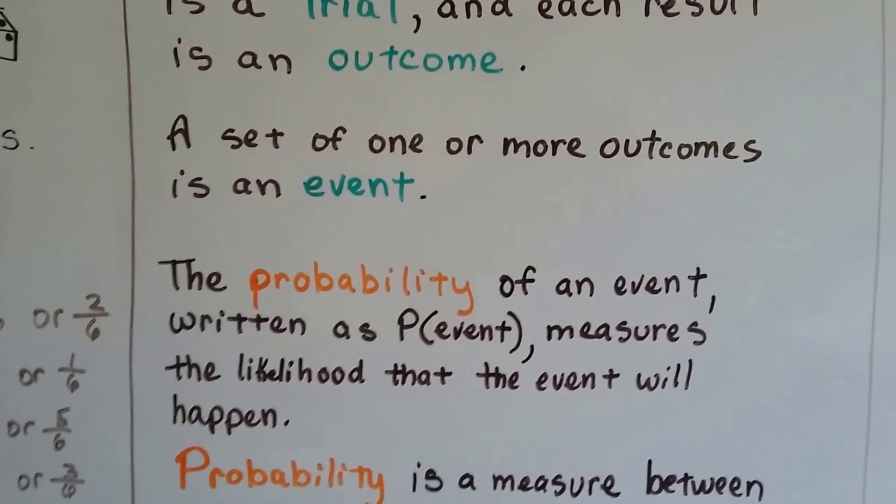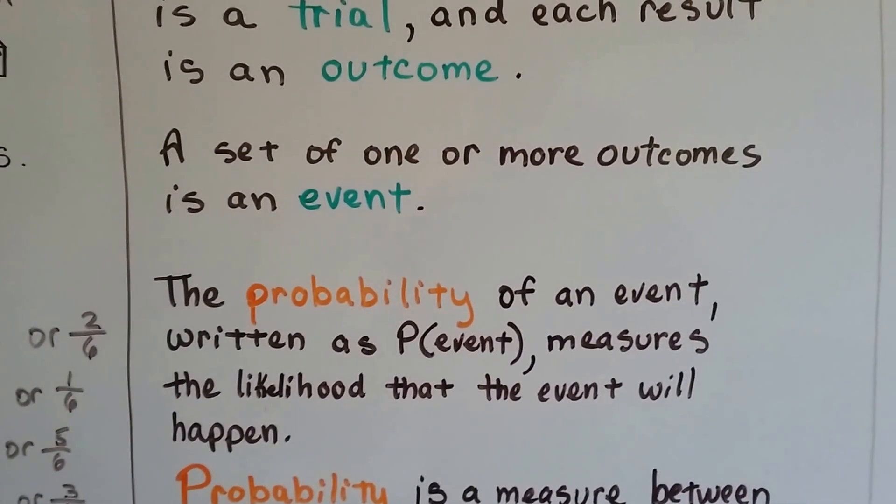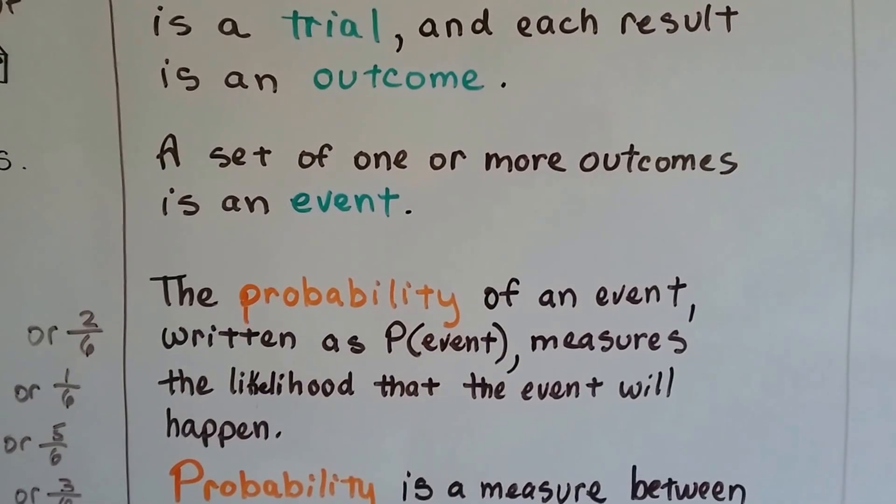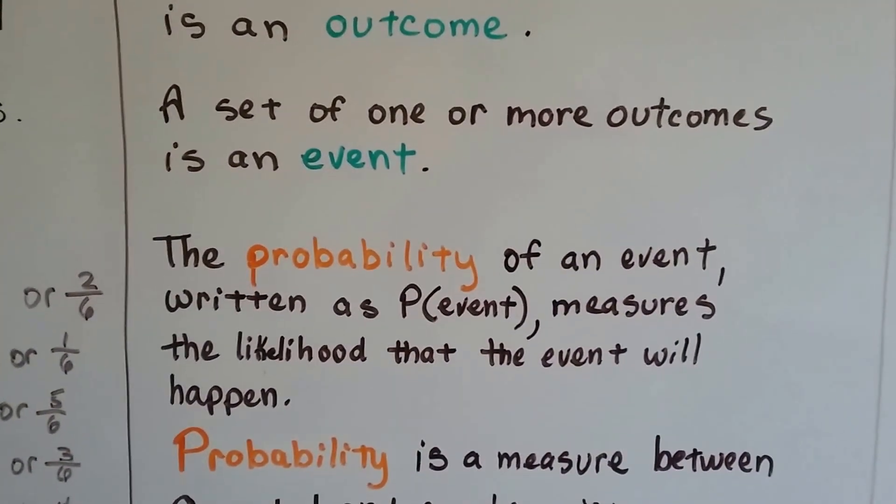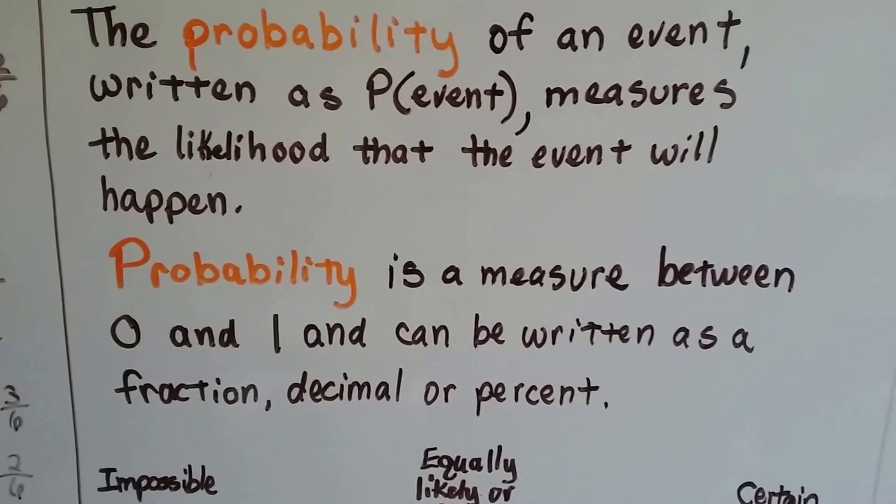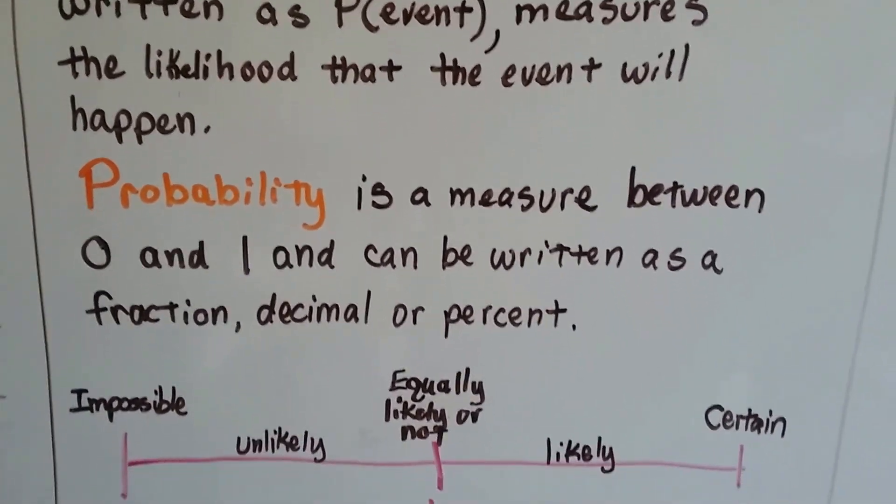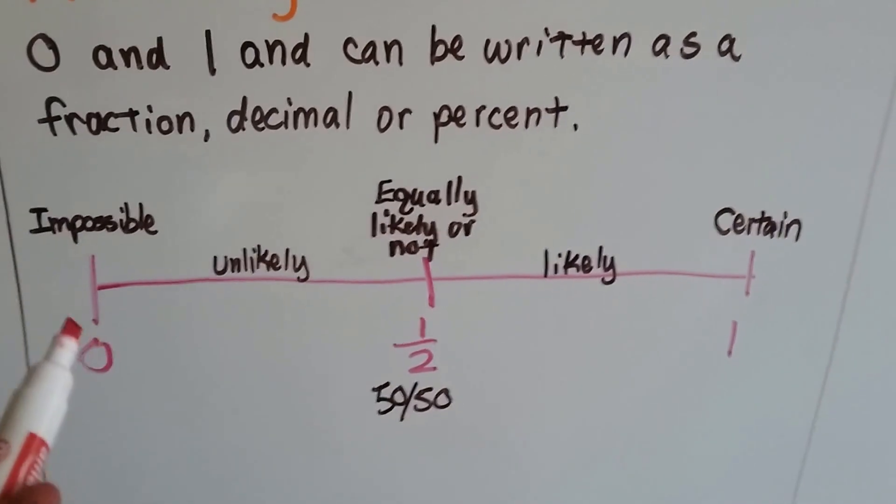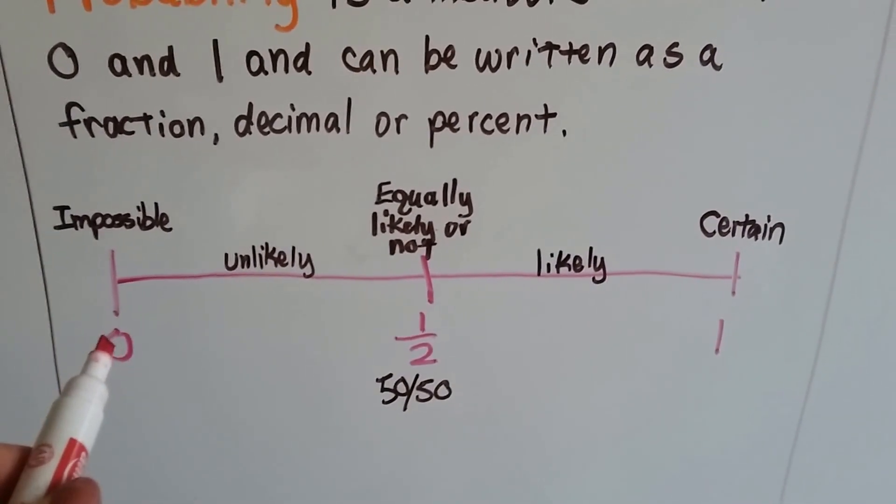The probability of an event written as P, and then event in parentheses, that means probability of an event, it measures the likelihood that the event will happen. Probability is a measure between zero and one, and can be written as a fraction, decimal, or percent. So on a scale of zero to one, zero means it's impossible for it to happen.